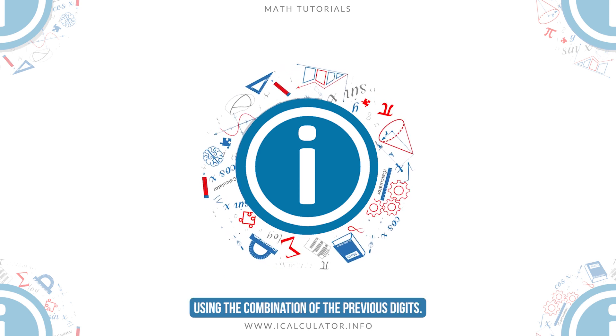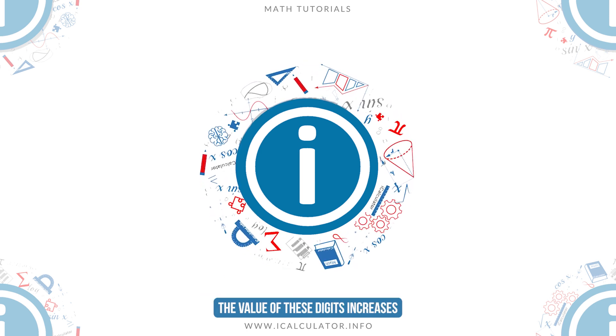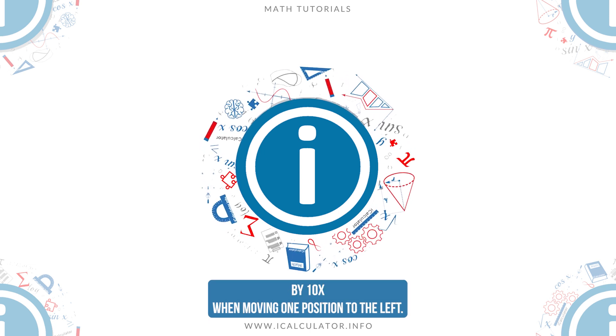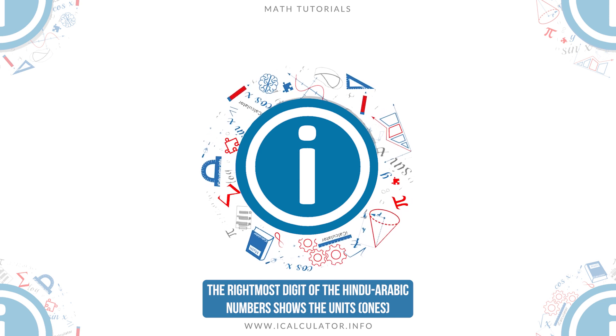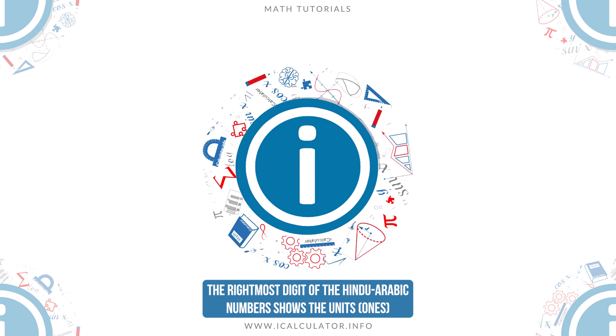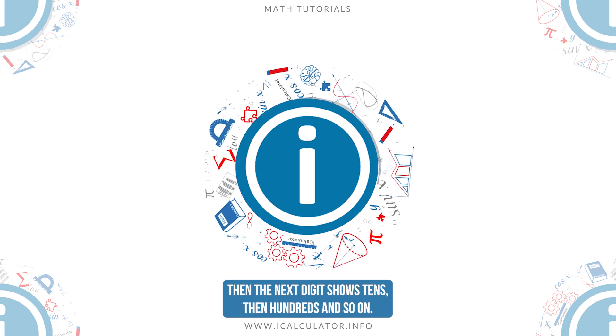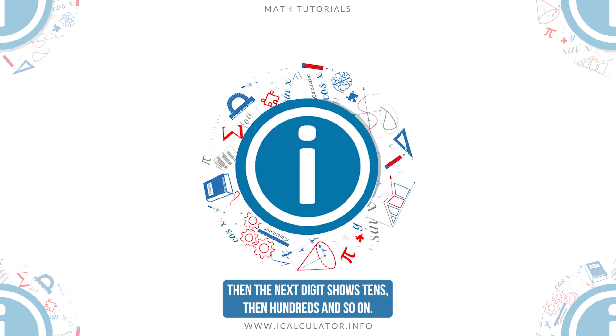Numbers in the Hindu-Arabic numbering system are written using the combination of the previous digits. The value of these digits increases by 10 times when moving one position to the left. The rightmost digit shows the units, then the next digit shows tens, then hundreds, and so on.